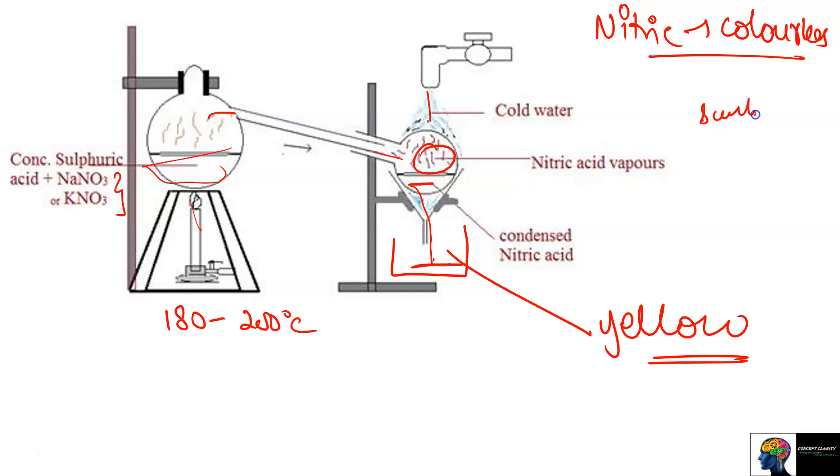We have discussed in the last video that nitric acid is very unstable. It means natural sunlight or a little heat can cause it to be unstable and decompose into nitrogen dioxide, water, and oxygen. Nitrogen dioxide is yellow in color, so what is going to happen? Nitric acid starts to decompose.